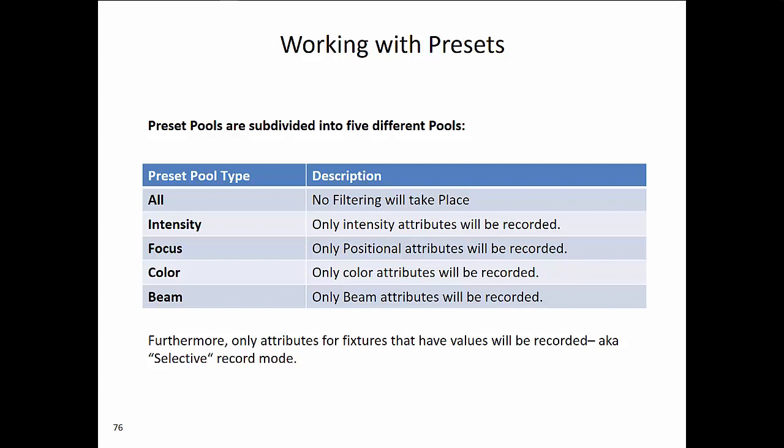The Intensity pool records only intensity parameters. The Focus pool is all about position information, so only positional parameters will be recorded. Color records only color parameters. And Beam records all beam parameters, which include gobos, prisms, shutters, animation wheels, zoom, iris, edge — everything that affects the beam.